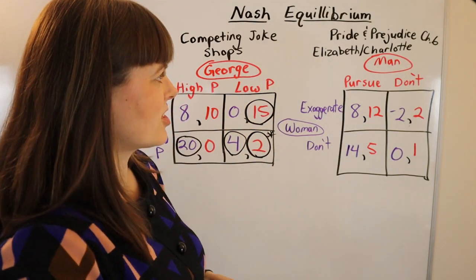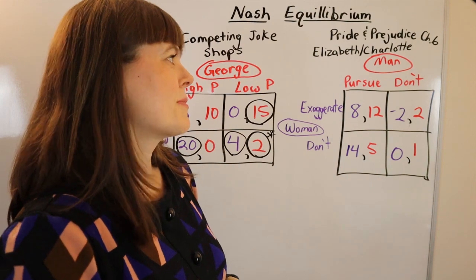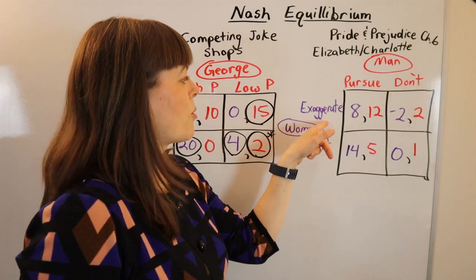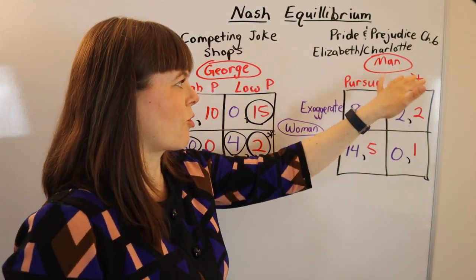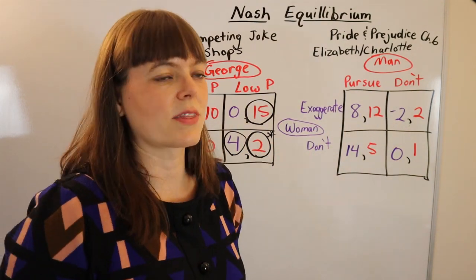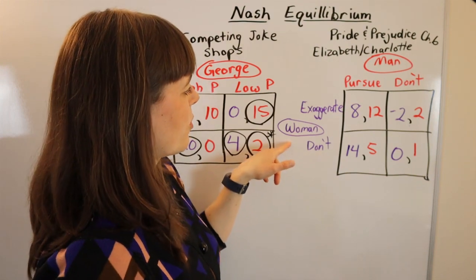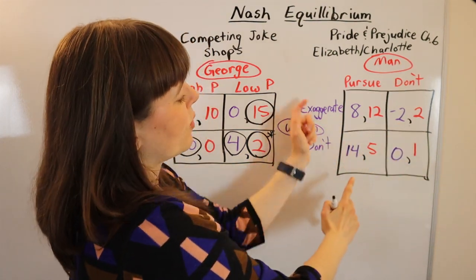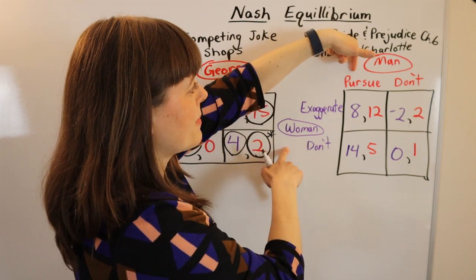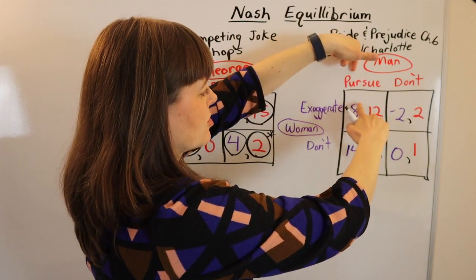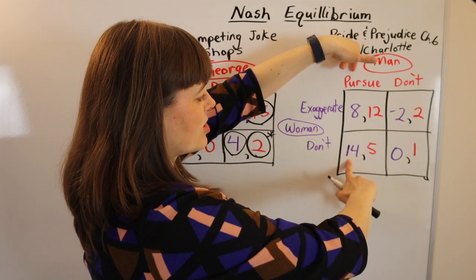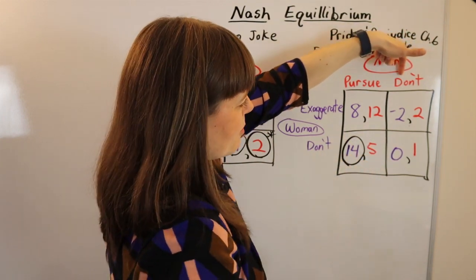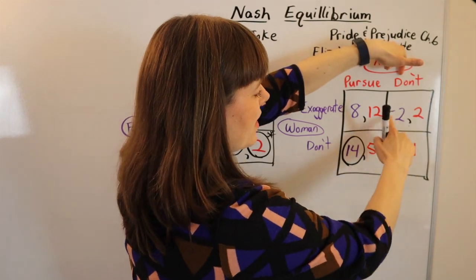Let's move to a Pride and Prejudice example from chapter six — the disagreement between Charlotte and Elizabeth. They're talking about the strategies of a man and a woman: should the woman exaggerate her interest, in order to get the man to pursue? To solve this, we start with player one's perspective — the woman's perspective. We look only at the woman's payoffs but check the man's strategies. The woman says: if the man chooses to pursue, would I wish I had exaggerated and gotten the eight, or not exaggerated and gotten the 14? She prefers the 14. If he doesn't pursue, she'd prefer the zero over the negative two.